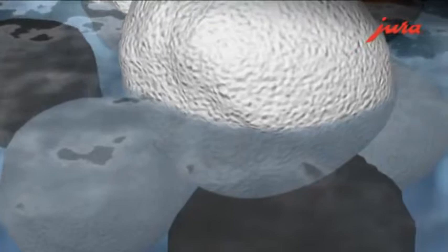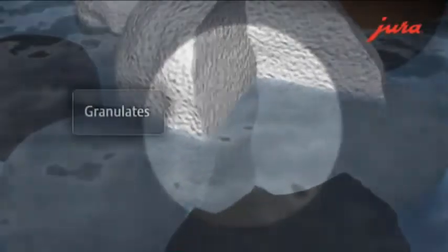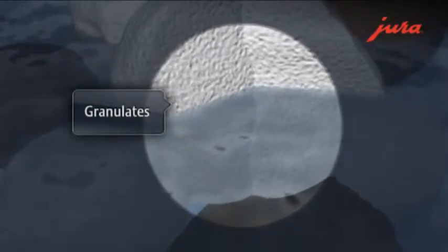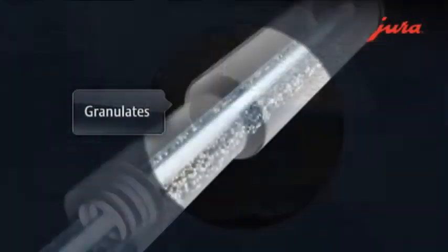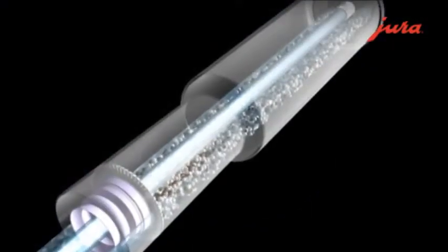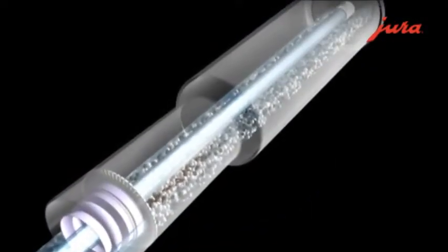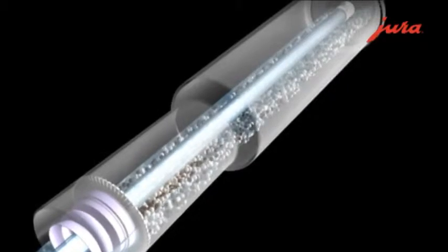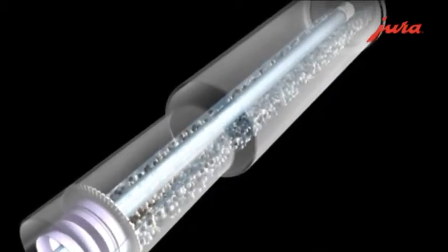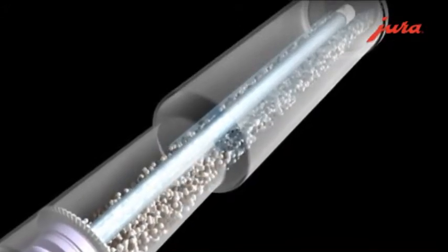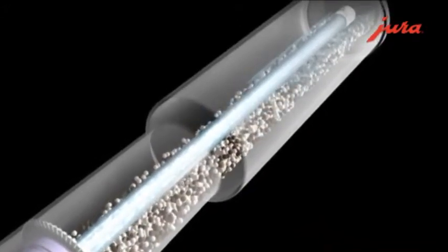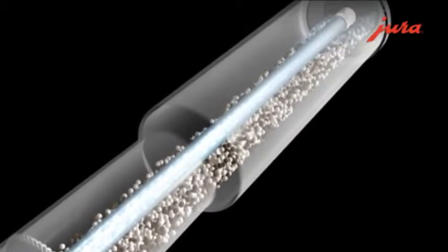The Claris Plus filter cartridge contains 100% natural ingredients. The granulates in the filter are whirled into motion by the flowing water. They filter the water by means of ion exchange. The minerals and fluorides that are important for health are retained. Active carbon removes substances that impair flavor and aroma, such as chlorine, to achieve maximum water quality.